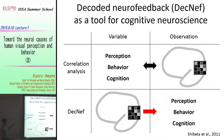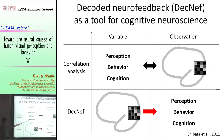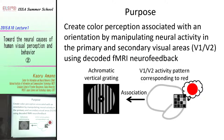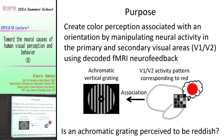In the conventional correlation analysis, we manipulate perception, behavior, or cognition and look at the correlated neural activity. In the first experiment, I manipulated illusory jitter perception and found that alpha oscillation is the neural correlate. But with decoded neurofeedback, we manipulate brain activity and then look at the change in perception, behavior, and cognition — so we can say more about causation. In the first decoded neurofeedback experiment, we tried to create color perception associated with an orientation by manipulating neural activity in the primary and secondary visual areas. During observation of an achromatic vertical grating, subjects tried to associate the brain activity pattern corresponding to red color, and we asked whether the achromatic grating was perceived as reddish.